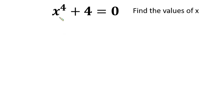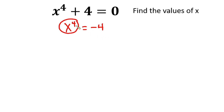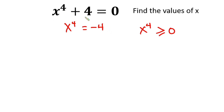Hello everyone. In today's video we have this interesting problem: x to the 4th power plus 4 is equal to 0, and we have to find the values of x. If we make x to the 4th power the subject we're going to get negative 4. Now x to the 4th power is always positive — it's greater than or equal to 0 — so there's no way this will equal a negative. That means this equation has no real solution, so all solutions will be complex.